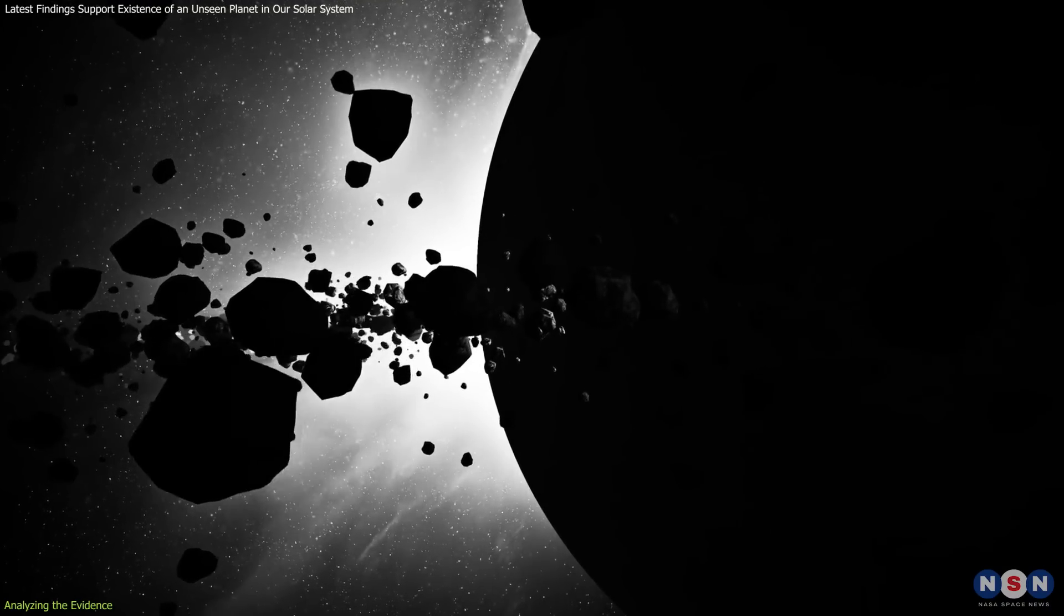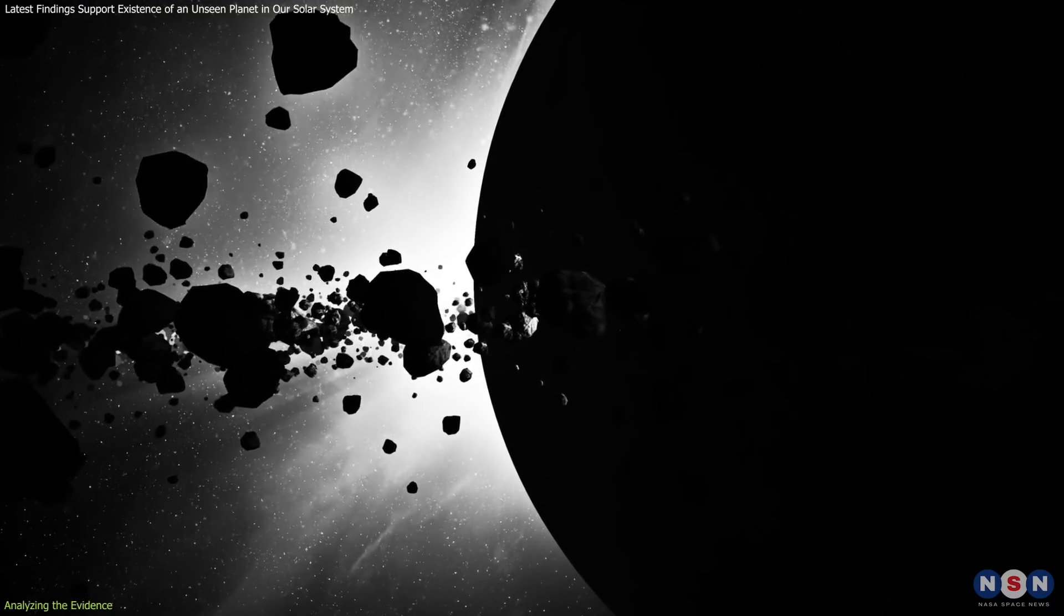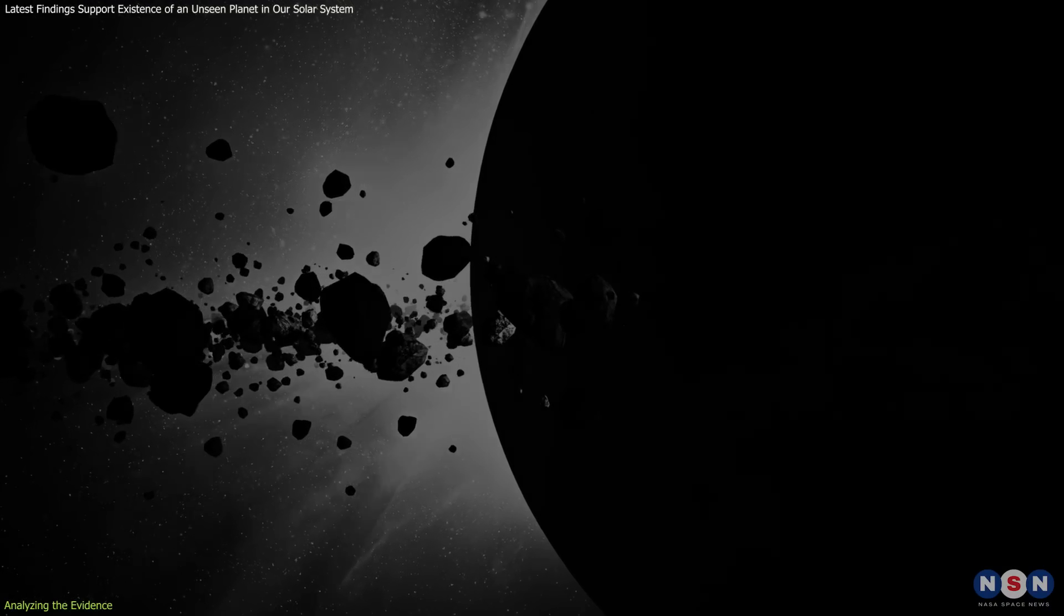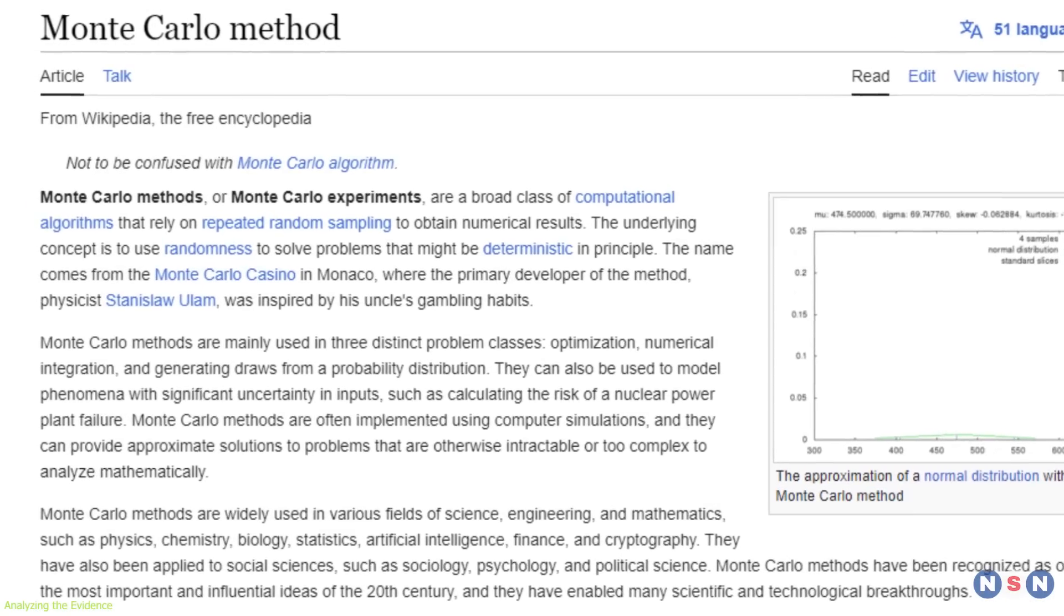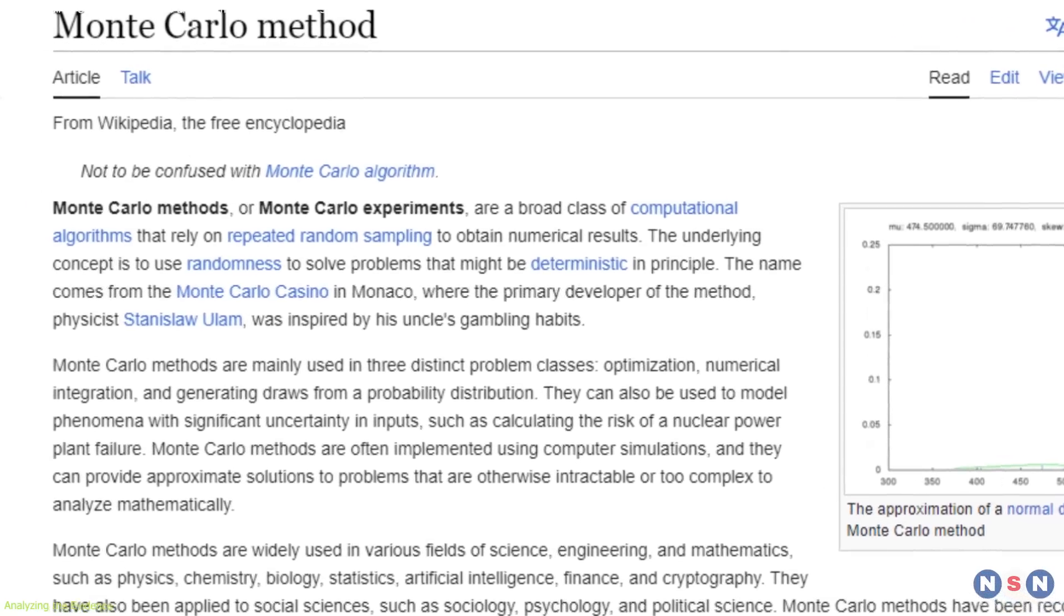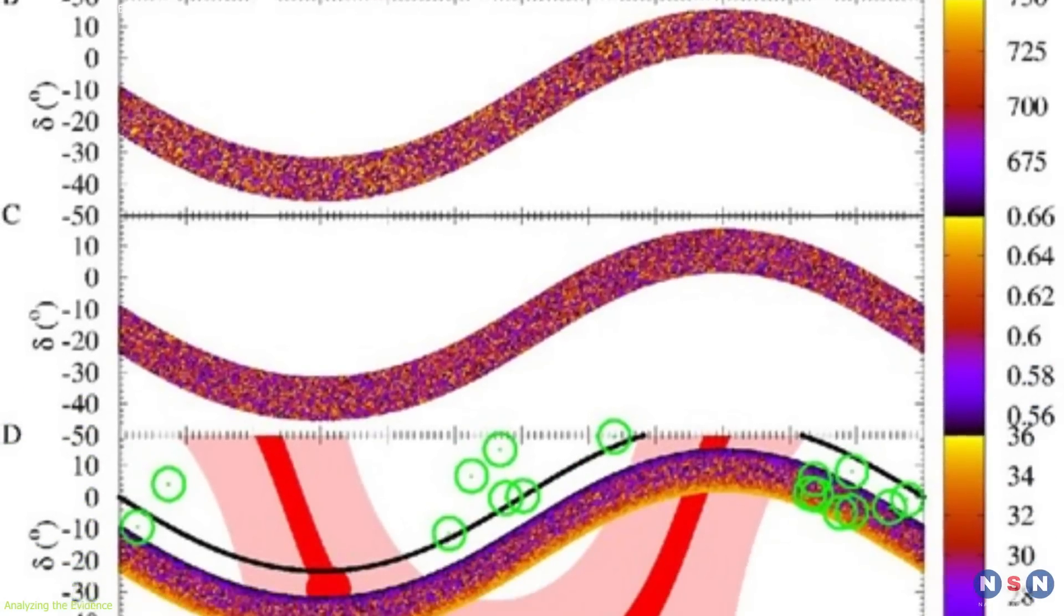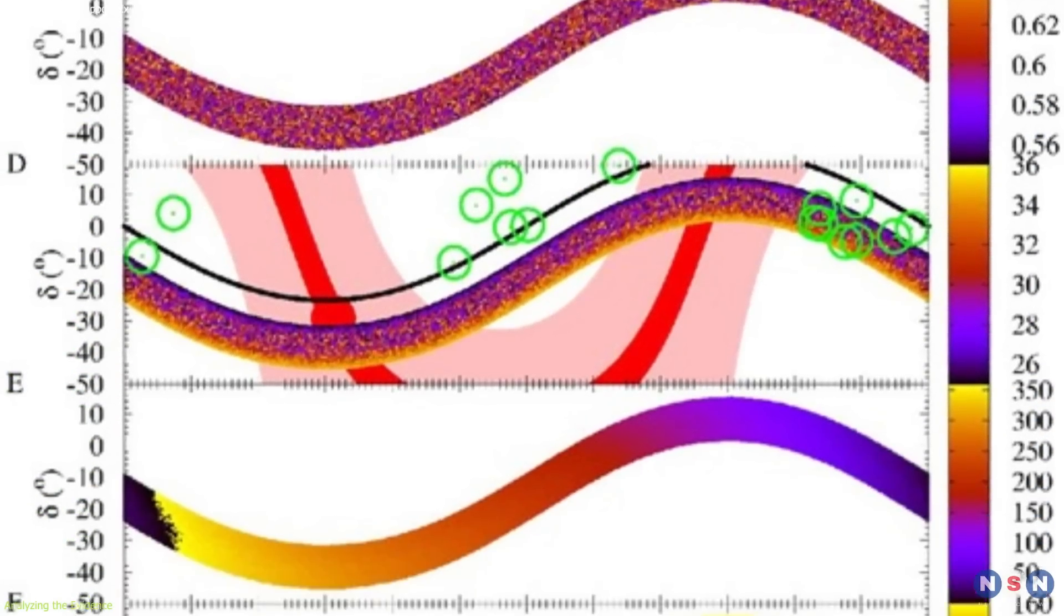Moreover, to ensure these findings aren't just flukes or caused by mistakes in observing, researchers use a technique called Monte Carlo simulations. This method uses random sampling to test how likely these orbital configurations would occur on their own, naturally.